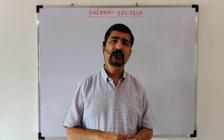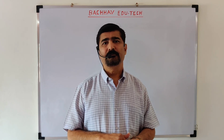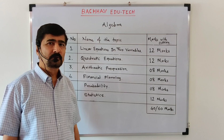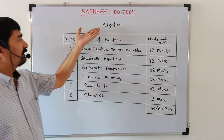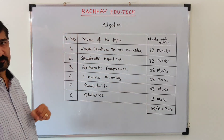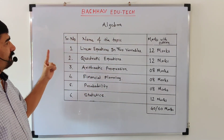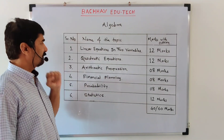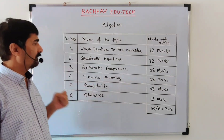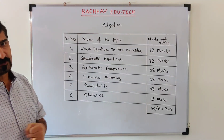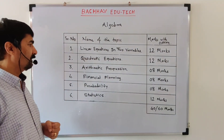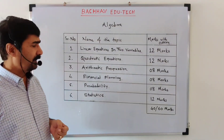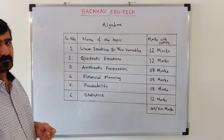Let us see the weightage of each chapter. These are our 6 chapters in algebra: the first chapter is Linear Equations in 2 Variables, second is Quadratic Equations, third is Arithmetic Progression, fourth is Financial Planning, fifth is Probability, and sixth is Statistics.